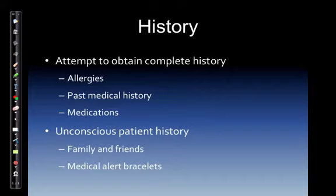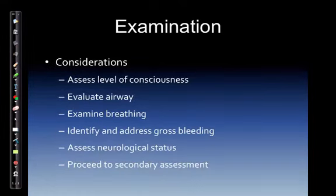Attempt to obtain a complete history, including allergies, past medical history, cardiac history such as a pacemaker or internal defibrillator, any previous surgeries, and medications — especially important in elderly patients who are generally on multiple medications. For unconscious patients, check for family, friends nearby, or medical alert bracelets. On examination, assess level of consciousness, evaluate the airway and breathing, identify and address gross bleeding and circulation, assess neurological status including sensation in extremities, then proceed to the secondary assessment, which may support findings from the primary.